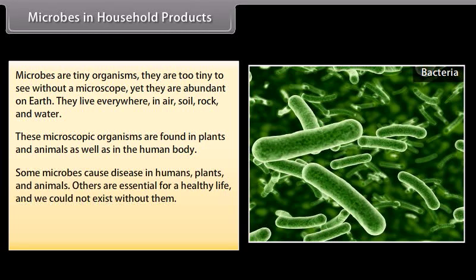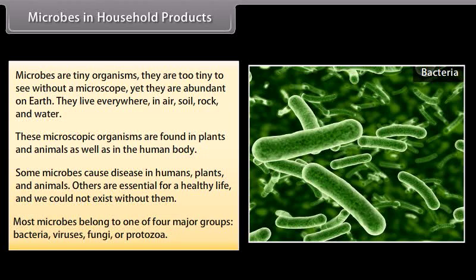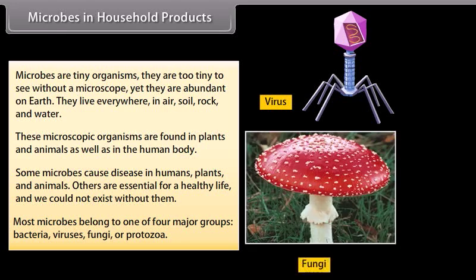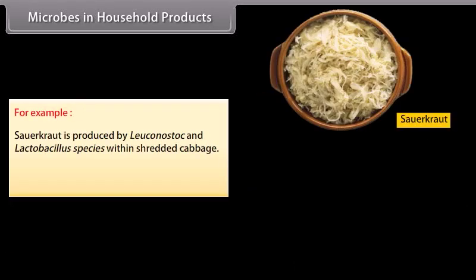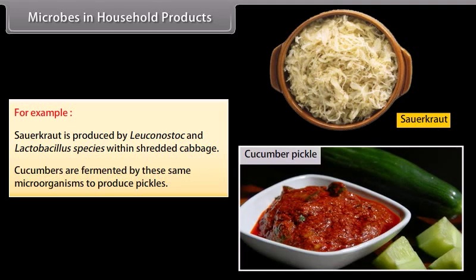Some microbes cause diseases in humans, plants, and animals. Others are essential for a healthy life, and we could not exist without them. Most microbes belong to one of four major groups: bacteria, viruses, fungi, or protozoa. There are many food products formed from microbes. For example, sauerkraut is produced by Leuconostoc and Lactobacillus species within shredded cabbage. Cucumbers are fermented by these same microorganisms to produce pickles.